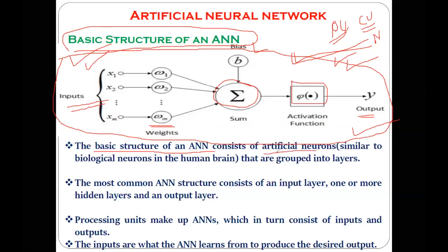This is the basic structure of an artificial neural network neuron, which consists of artificial neurons similar to the biological neuron in the human brain. The components are different but the functionality is the same. That's why the basic structure of an artificial neural network consists of artificial neurons similar to biological neurons in the human brain, grouped into layers.